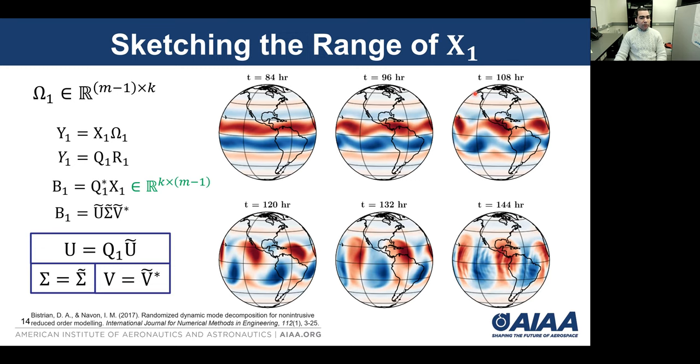This is basically what we do here. We define a sketch that captures the range of X1. We perform the SVD on B1 here, which now has lower dimension. Then we map the singular vectors back to the high dimensions using these relations. The results are very similar to the result obtained without sketching, but with sketching the calculations are much cheaper because we use a smaller matrix for the SVD.